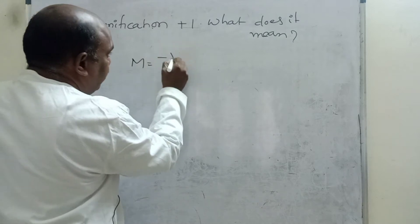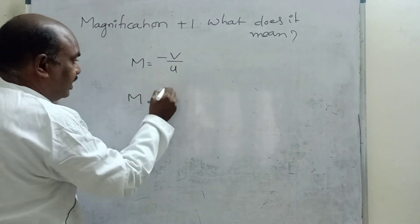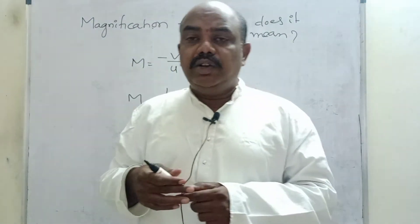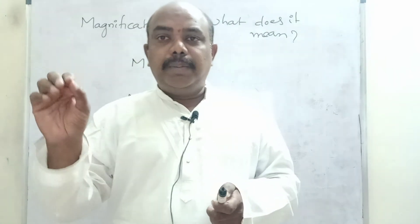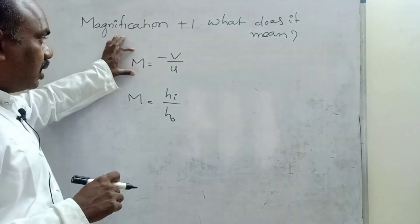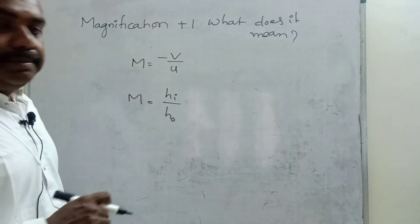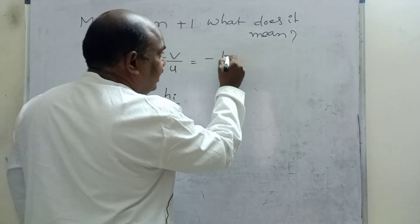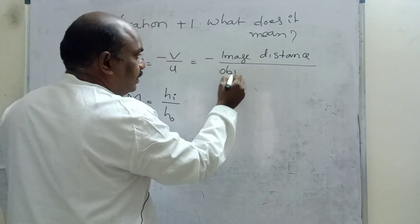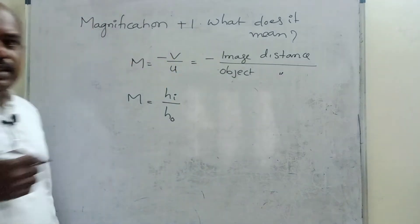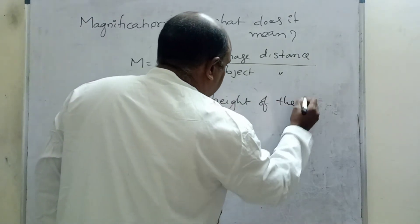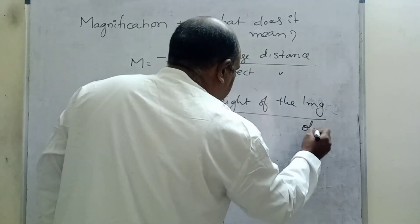Magnification is equal to minus V by U. The second formula: magnification is equal to HI by H0. You can go to our YouTube channel, Physics for All, Parvatham Satish Kumar — go to the playlist for magnification derivation and watch carefully. Magnification equals minus V by U, or HI by H0. Here, V means image distance, U means object distance. HI means height of the image by height of the object. These are the two magnification formulas.